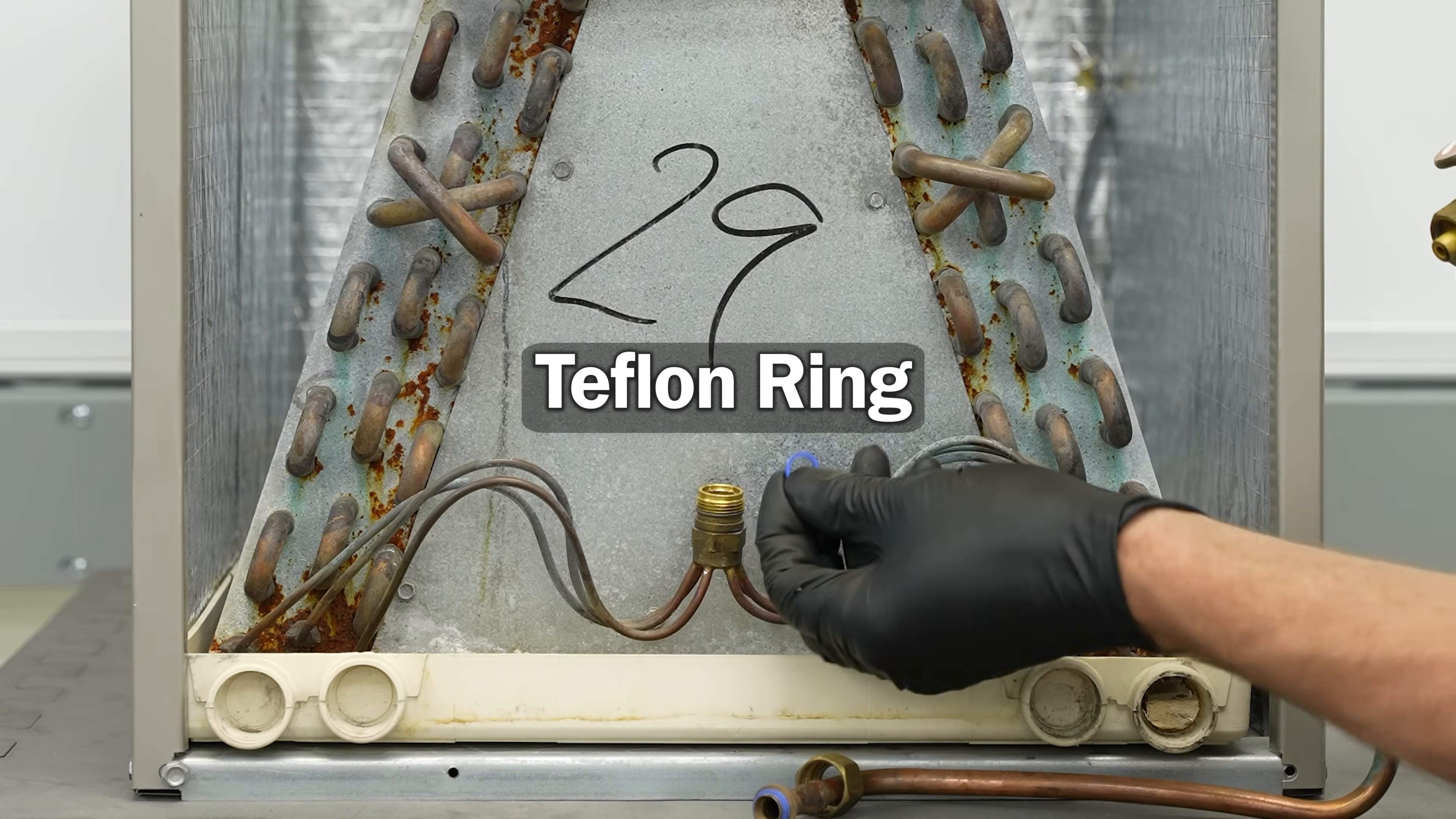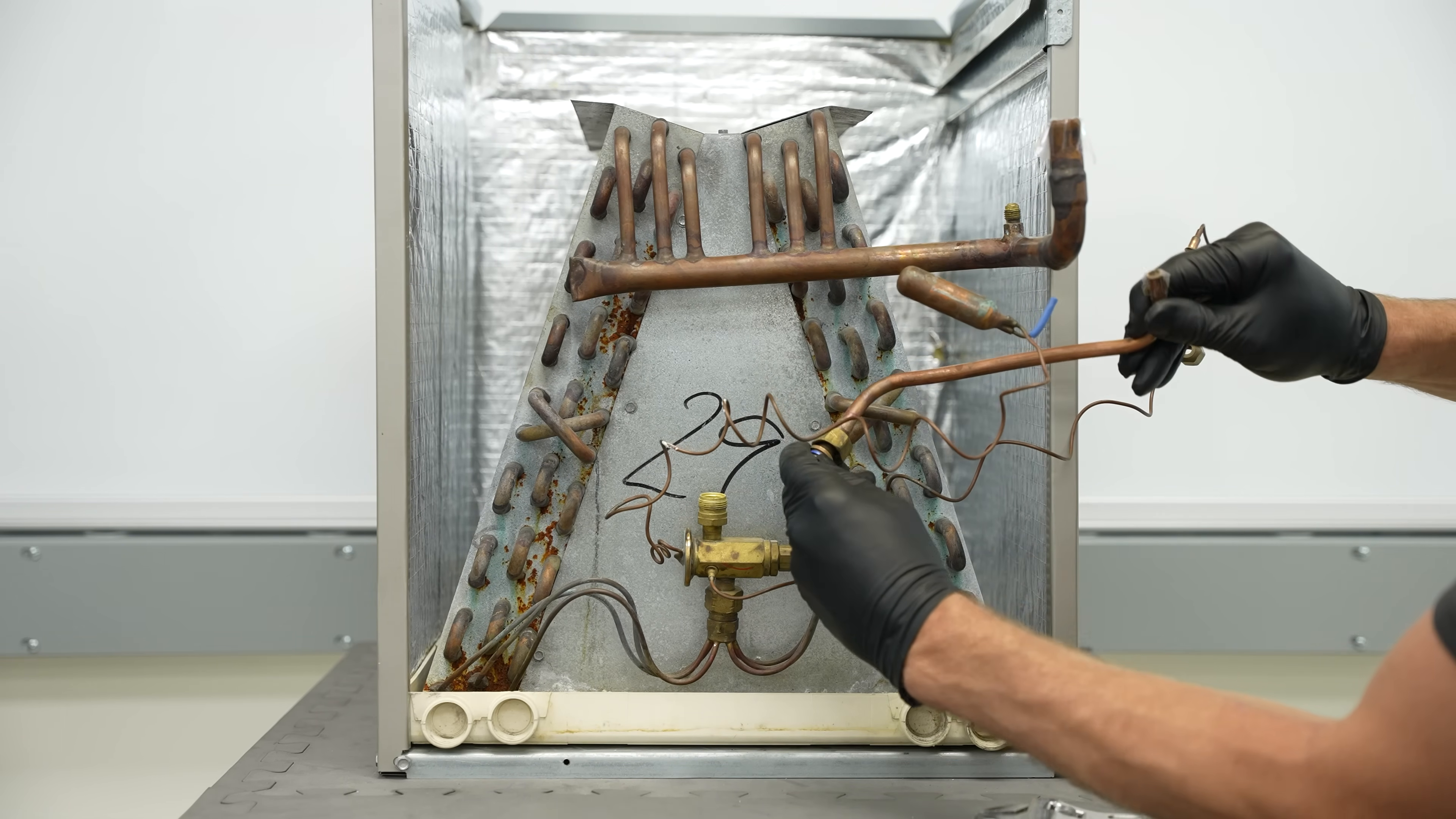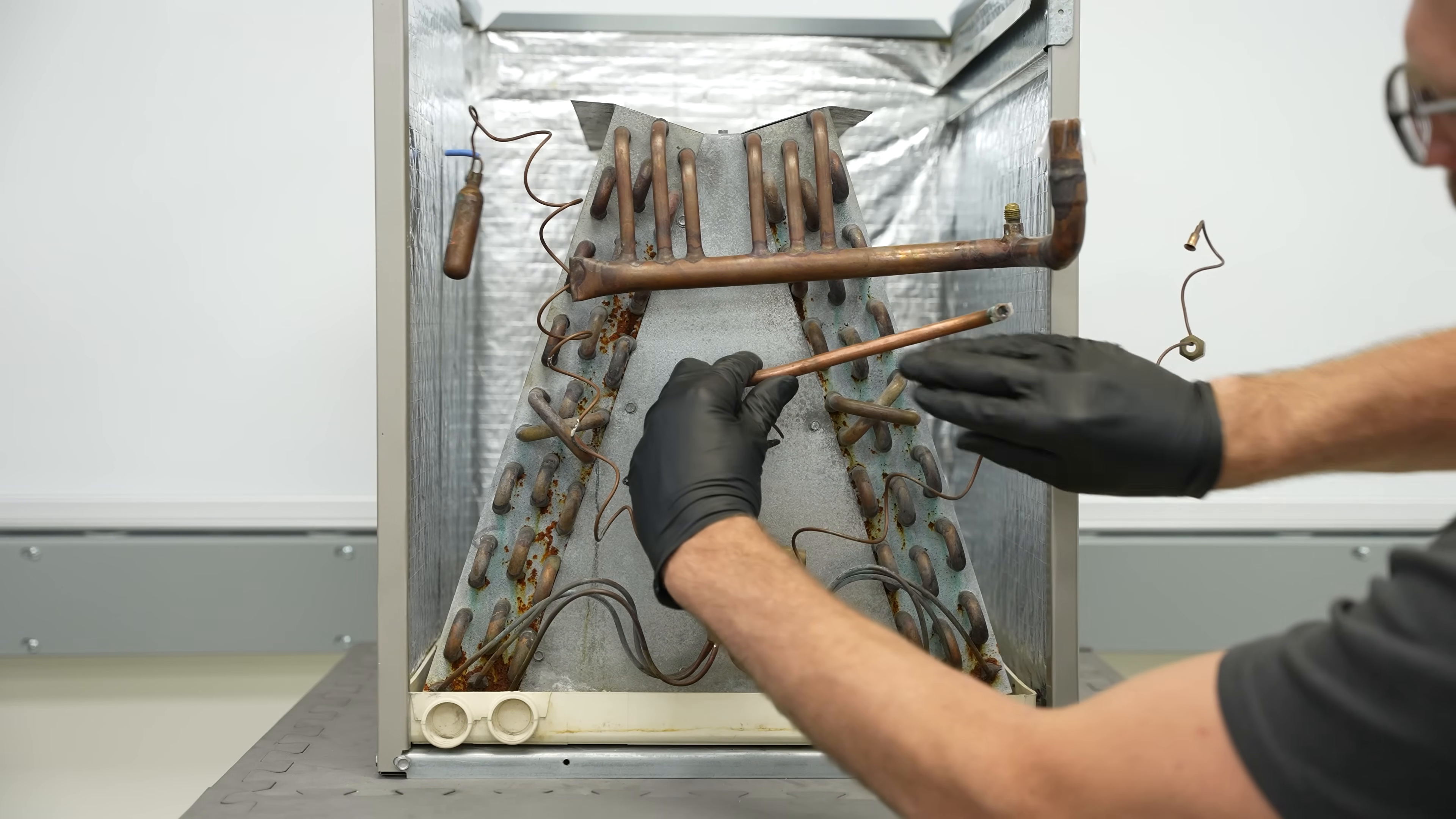We're going to go ahead and put in a new Teflon ring. Of course, in our case, we're just putting in this used TXV, but in the field, you're going to be replacing this with a new one. Once again, up here, you're going to want to replace this ring with a new one. We're also going to bend this down because we are up a little bit higher now.